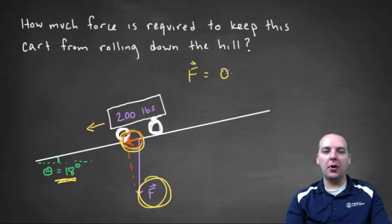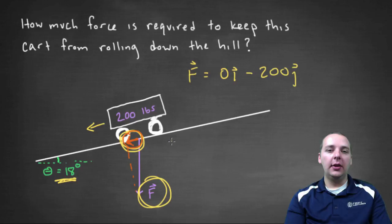Capital F would be 0i, because it has no left-right horizontal component, minus 200j. Notice I made that negative because it's downwards.